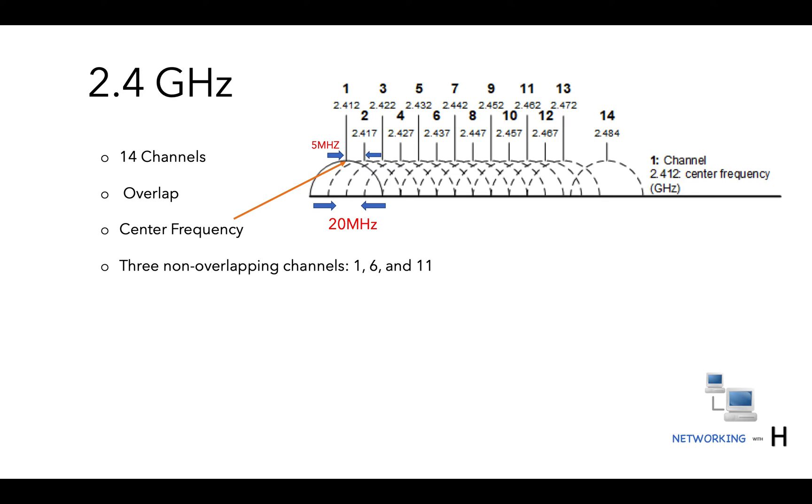These non-overlapping channels are far enough from each other and they have sufficient space between the channel centers and do not overlap. Channels 2, 3, 4, 5, 7, 8, 9, and 10 all overlap significantly, causing adjacent channel interference.